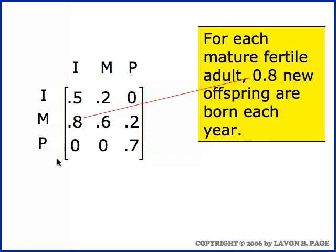In the bottom row with the older group, they're post-fertile so they don't produce any new births, and of course none of them get younger and join the mature group. Seventy percent of them survive in the older group and thirty percent die out over the course of the year.